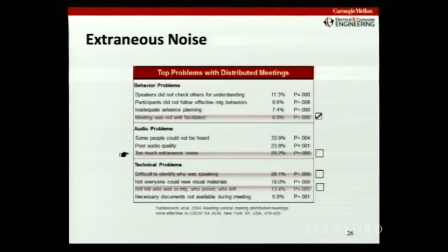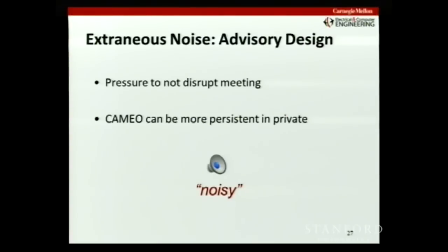The next problem we wanted to focus on was too much extraneous noise — a problem that 20% of people felt very significantly impacted meeting effectiveness. There's social pressure not to disrupt the meeting by saying 'hey, can you turn that volume down?' This is where we felt Cameo could take the role of the bad guy — Cameo can be more persistent, especially since it's a private notification. Only the offending party hears it. So the communication goes on as normal; only you hear it in your channel. It's a very short notification — just 'noisy.'